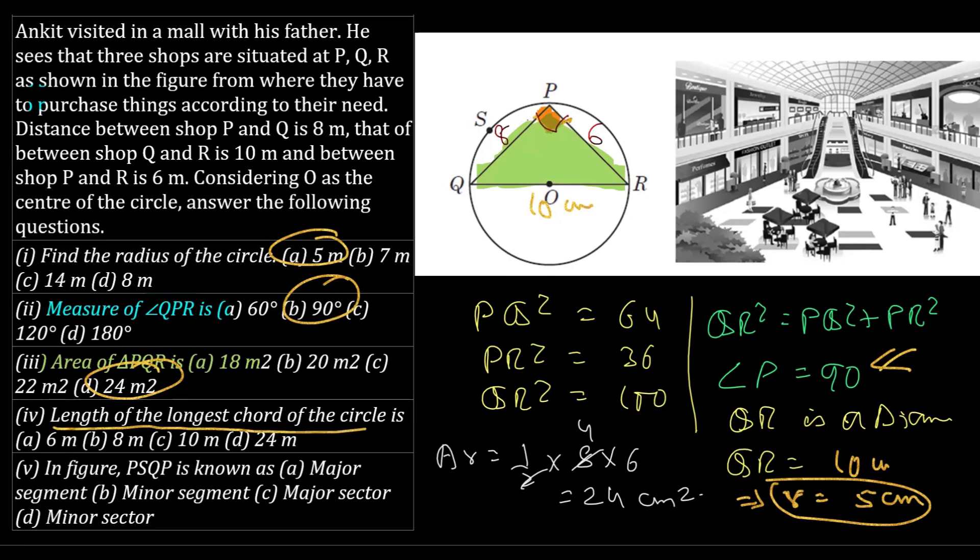The other part, the length of the longest chord of the circle. Well, you know that the longest chord for a circle is the diameter. And we have already obtained the length of the diameter. The diameter here is 10 centimetre. For the next part, that is fourth part, the answer is 10. That is option C.